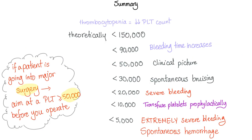Let's put it all together. Thrombocytopenia is a decreased platelet count — theoretically less than 150,000. Less than 90,000, bleeding time starts to prolong. Less than 50,000, you get the clinical picture with signs and symptoms. Less than 30,000, many patients get spontaneous bruising. Less than 20,000, many patients get severe bleeding. Less than 10,000, transfuse platelets prophylactically even without symptoms. Less than 5,000, extremely severe bleeding and spontaneous hemorrhage.